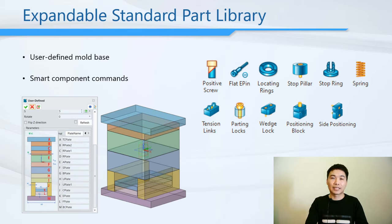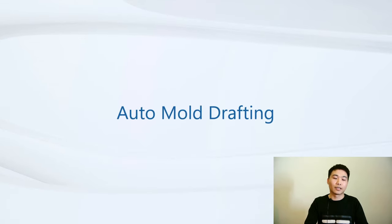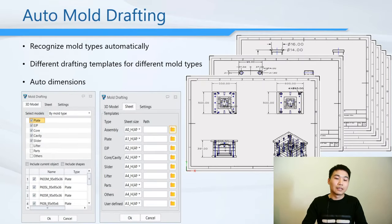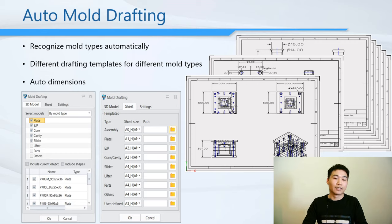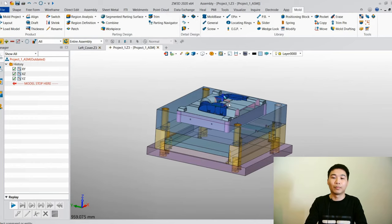After finishing the mold assembly design and standard part insertion, finally we offer an amazing function — auto mold drafting. ZW3D auto mold drafting can recognize mold part types automatically, like the plate, ejector pin, slider, cavity and core, and other parts. You can also define different drawing templates for different mold part types. Users can decide whether to create auto dimensions when generating the drawing. Let's go to the software to continue this case and finish our mold assembly design.